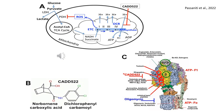CADD522 inhibition: this compound inhibits ATP synthase, reducing ATP production, decreasing OCR, and elevating ROS. This metabolic disruption is significant in cancer biology, as ATP synthase is essential for stem cell maintenance, drug resistance, and metastasis.